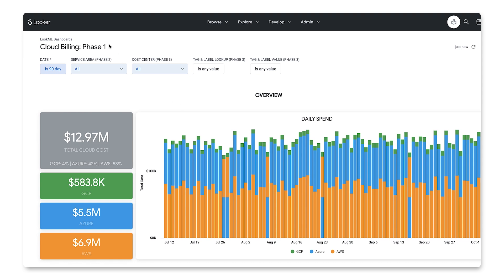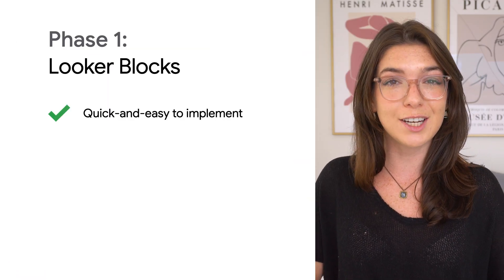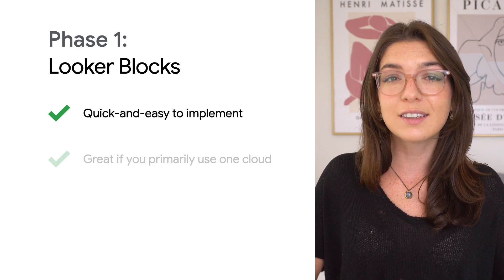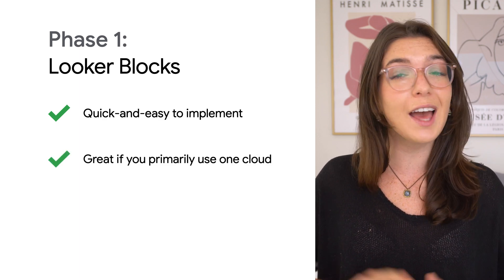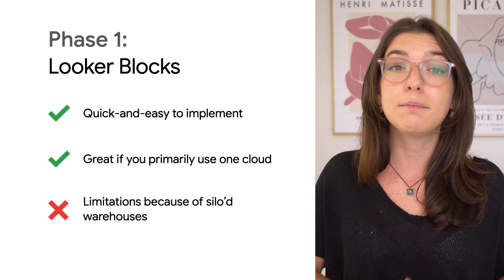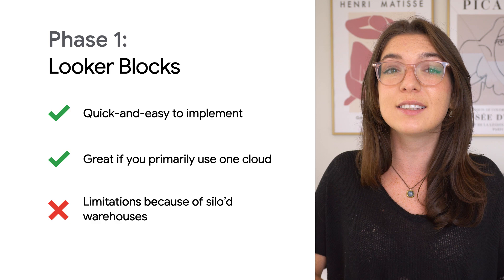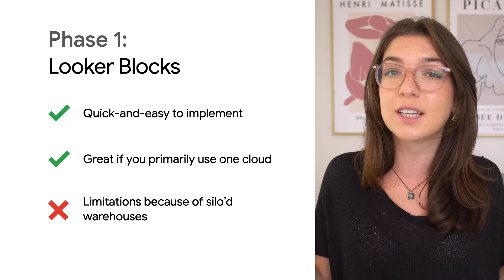Also in phase one, you get access to a simple dashboard that shows you spend across all of these clouds using Looker's merged results feature. Here, you can get an idea for how spend compares across providers. With phase one, you jumpstart your cloud cost management with out-of-the-box reporting. And if you're only heavily using one cloud, it might be suitable for your longer-term needs. But there are some limitations to this approach, primarily because of the data that's siloed in provider-specific data warehouses.